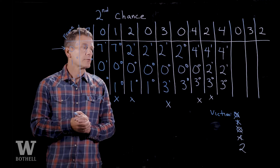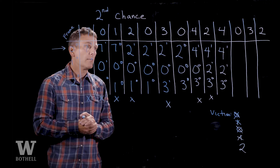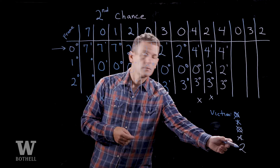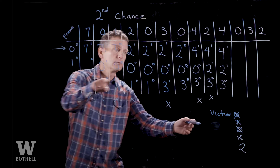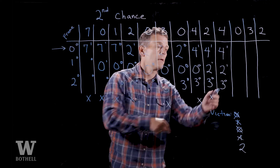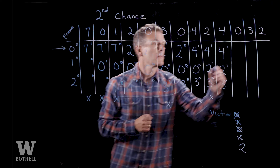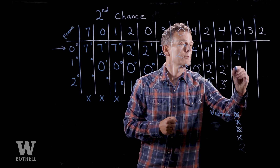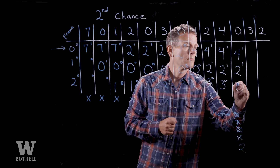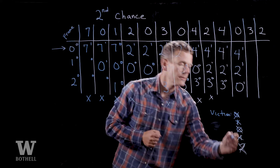Virtual page zero now gets referenced. It's not in physical memory, so we have to handle a page fault. Our victim frame is two. Page three is there and its reference bit is zero, so we can kick three out. Our victim frame now becomes zero.